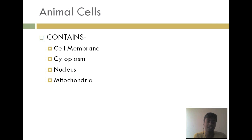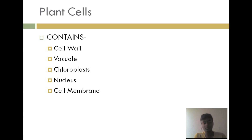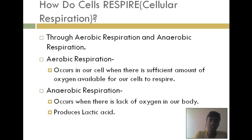In plant cells you can find a nucleus, mitochondria, cell wall, cell membrane, vacuole, chloroplast, and cytoplasm. So animal cells contain cell membrane, cytoplasm, nucleus, and mitochondria, while plant cells additionally contain a cell wall, vacuole, and chloroplast.